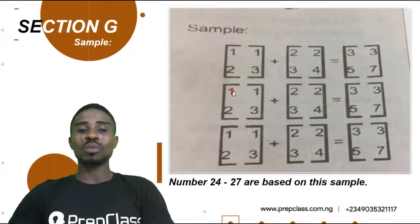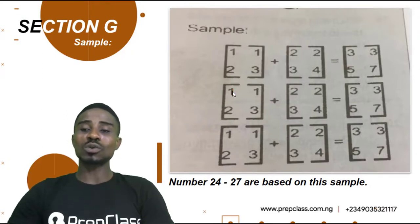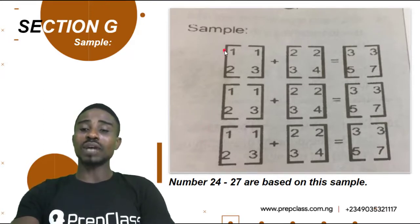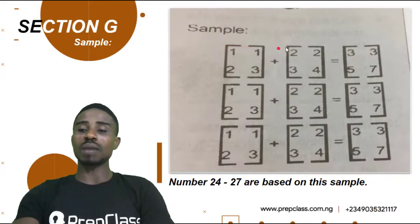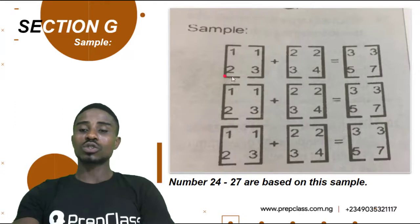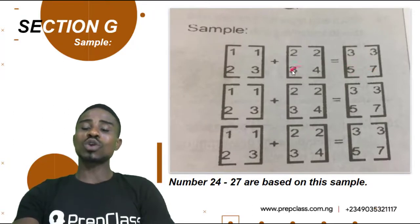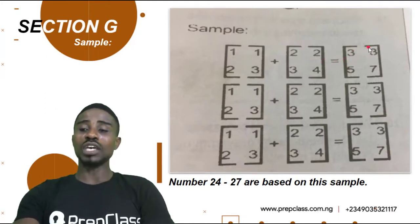As said earlier, we will be solving section G and this is a sample which will guide us through answering questions 24 to 27. Let's have a clear understanding of what this sample is telling us. If you look at this, we have a bracket having numbers 1 1 2 3, plus another one having 2 2 3 4, and the third one equal to 3 3 5 7. We need to understand how we got this answer, because only then can we solve questions 24 to 27.